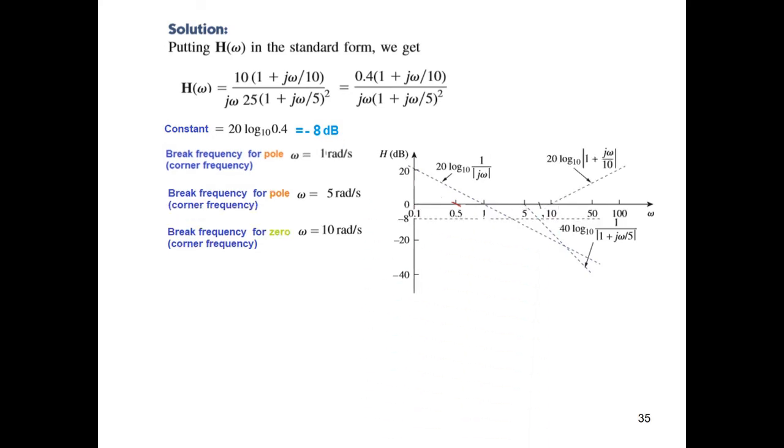And next we plot for the zero. It is at 10 dB, sorry, at frequency 10 radians per second. And its slope is going positive at 20 log, or with the 20 dB per decade slope. So we have plotted all four.